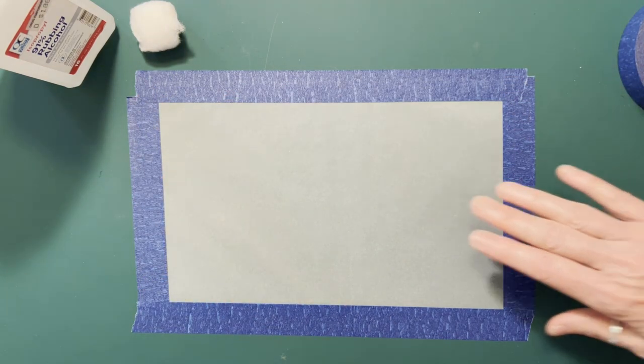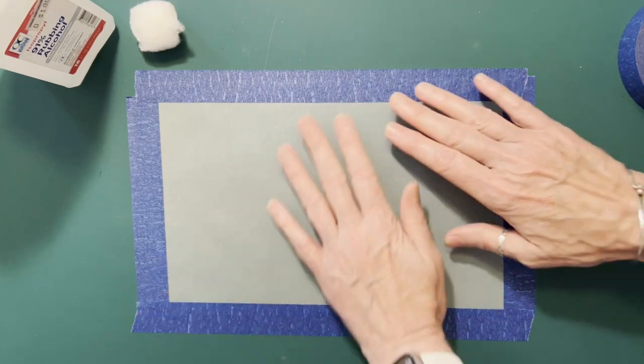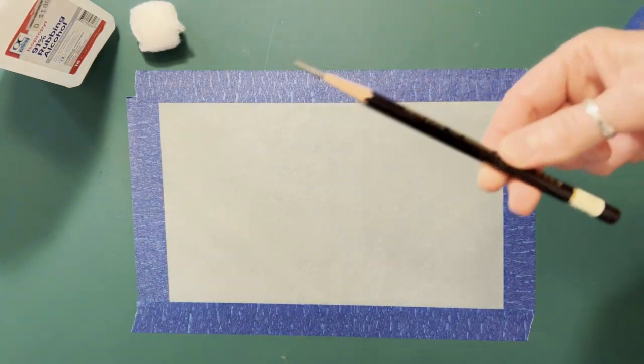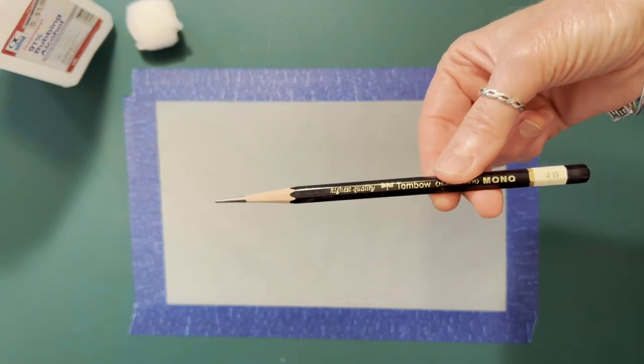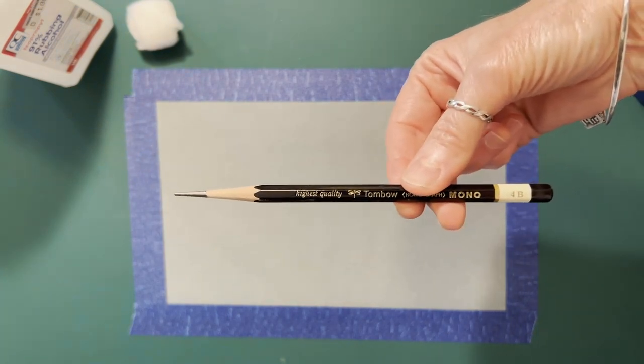Once you have your tracing paper taped down, nice and smooth and flat, find a good pencil. This is a 4B pencil. It's dark, but it's not horribly dark.